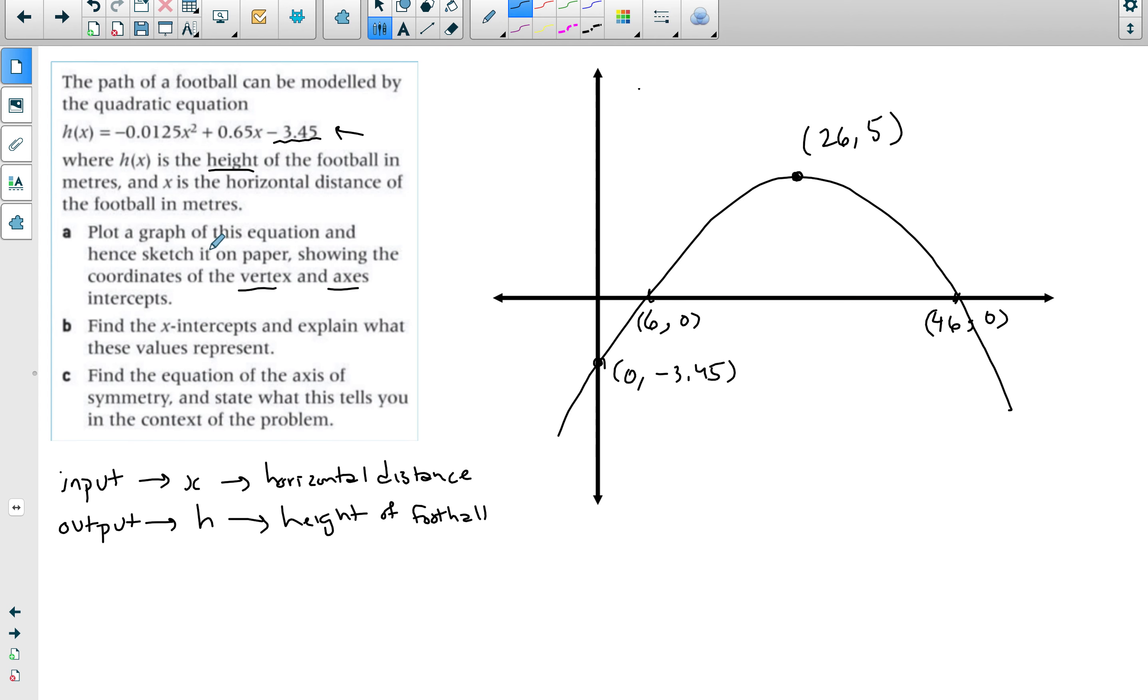Now how do we interpret these values? Part b asks you to interpret with reference to the x-intercept. Remember this is the distance that it travels. This is the input and this is the output. We said that the input is the horizontal distance and the output is the height.